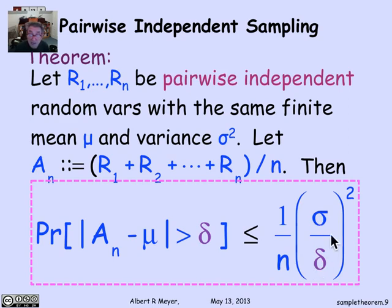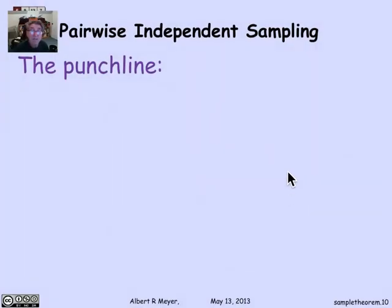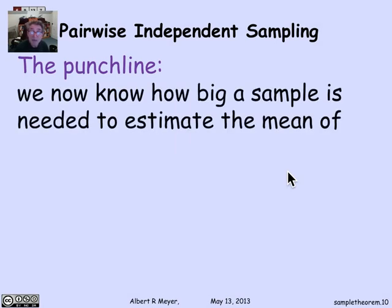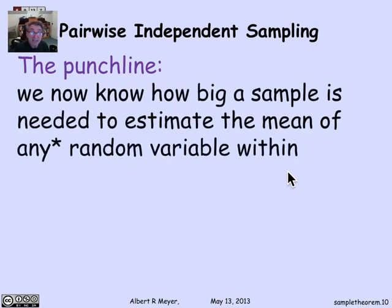And if you tell me how small you want this to be, I will know how big an n to choose. So this tells me how big a sample I need, how many tries I have to make in order to get the probability that the mean is within a specified tolerance delta as small as you specified. And that is our independent sampling theory.